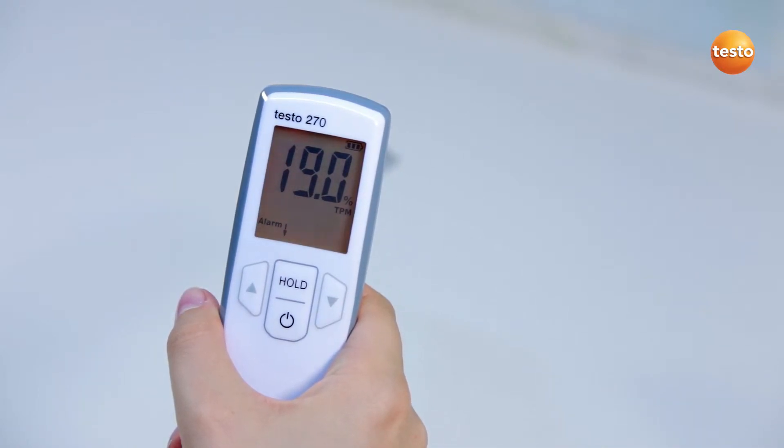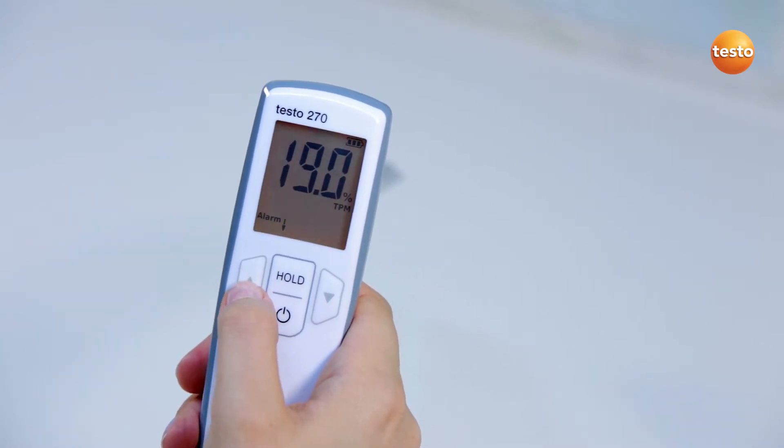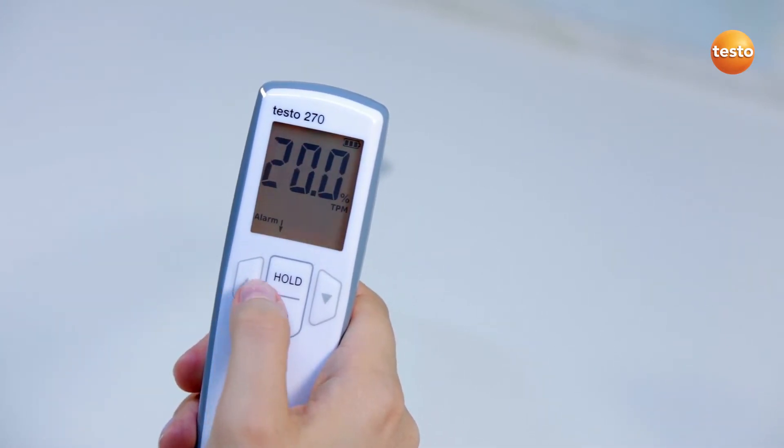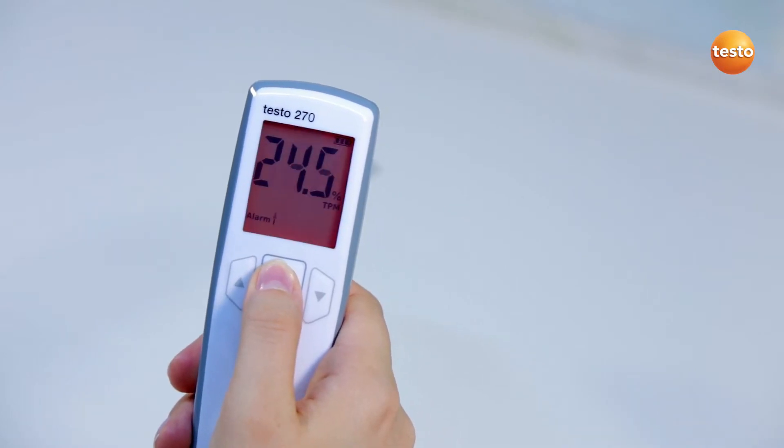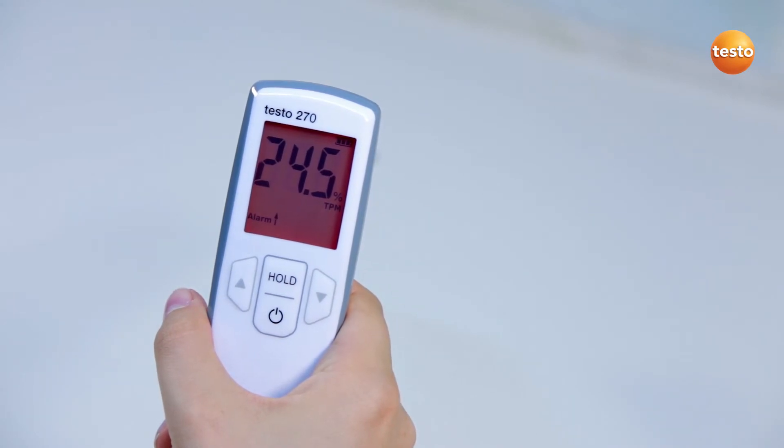In the first menu item, I can define my TPM limit values. With the arrow buttons, I change the lower limit value and confirm with the hold button. Then comes the upper limit value, which I also set using the arrow buttons.